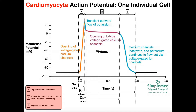This occurs for each cardiomyocyte in the heart once per cardiac cycle. One thing to be clear about: we're looking at one individual cell. It doesn't matter if it's an atrial or ventricular cardiomyocyte — this is occurring for every single cardiomyocyte in the heart. It may be at different times, because the atria contract before the ventricles, and even within the ventricles certain parts contract before others. But this process is happening for every individual cardiomyocyte.